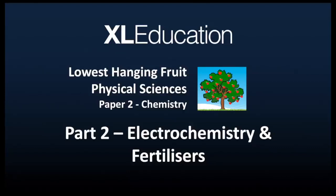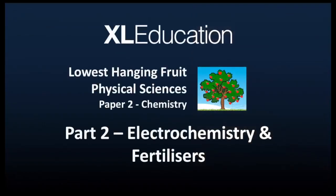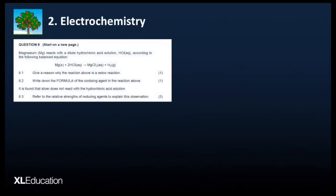Hi guys, I'm Eddie. This is the second part of our low-hanging fruits for Paper 2, which is organic chemistry. We are going to look at electrochemistry and fertilizers. Let's go straight to the question — this is Question 8, which is on galvanic cells. You should basically be in a position to tell which questions are the low-hanging fruits, the ones that are easy to collect marks from. I've broken the question into different sections.